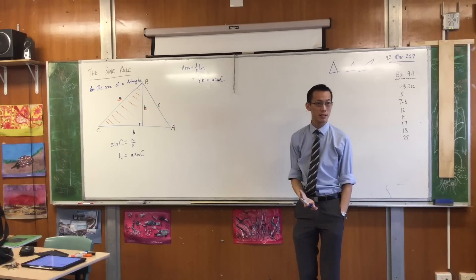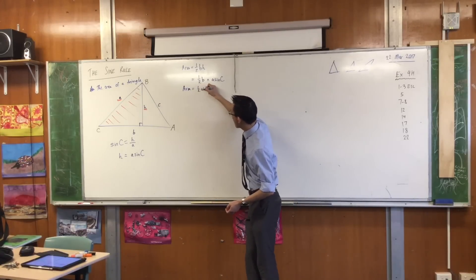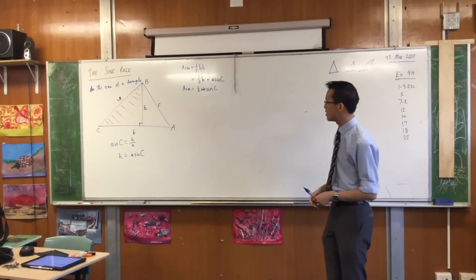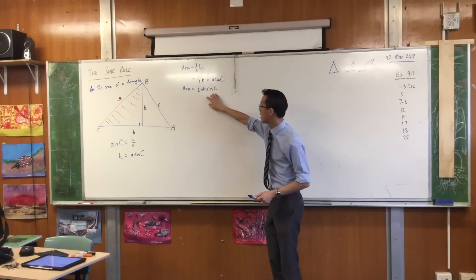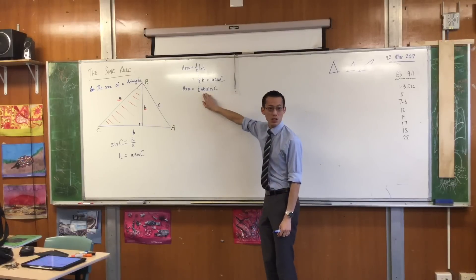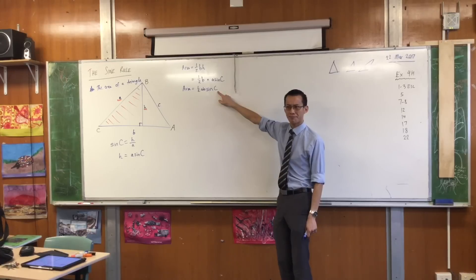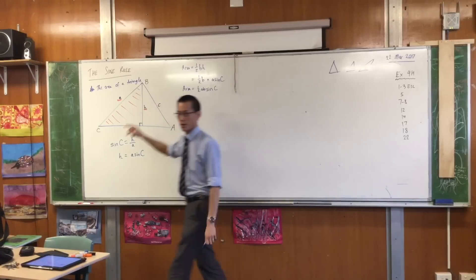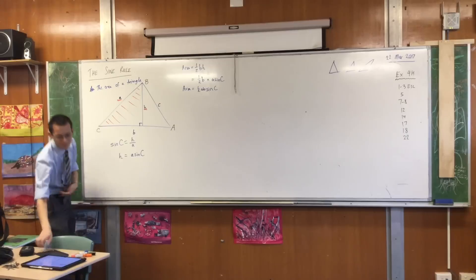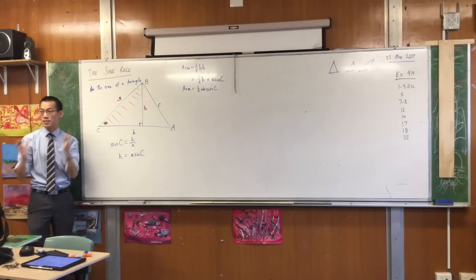And instead of writing height, I'm going to write this: base times A sine C. Does that make sense? And now the familiar area equals half AB sine C emerges. So what we've done is we've transitioned away. This thing doesn't need to know the perpendicular height. It's got the perpendicular height sort of baked into it. As long as you know any two sides and which angle do I need again? It's not just any angle. Which one?